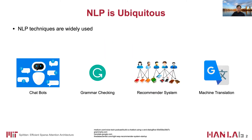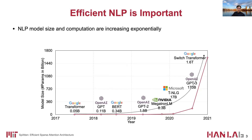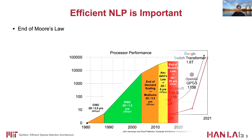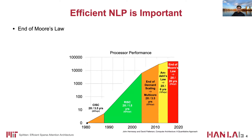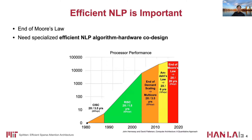NLP techniques have been widely used in many real-world applications ranging from chatbots to machine translation. Their impressive performance comes at the cost of low efficiency, as the model size and computation are both increasing exponentially. Due to the end of Moore's law, general processors cannot provide sufficient computing power. Therefore, specialized NLP algorithm and hardware co-design is critical to solve this mismatch.